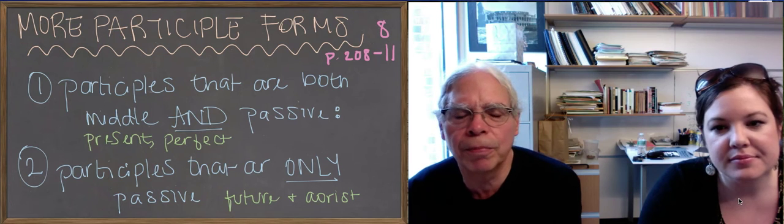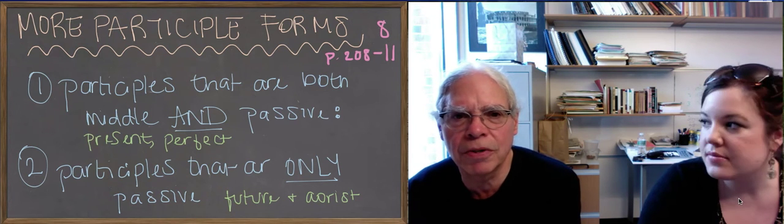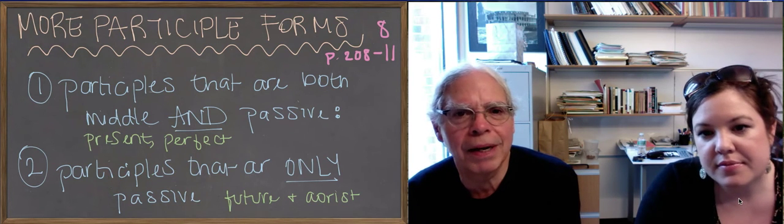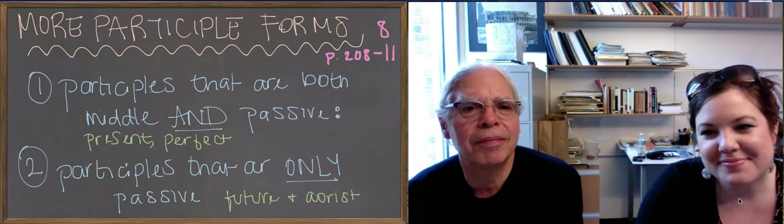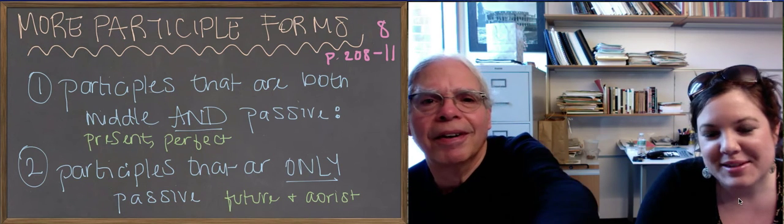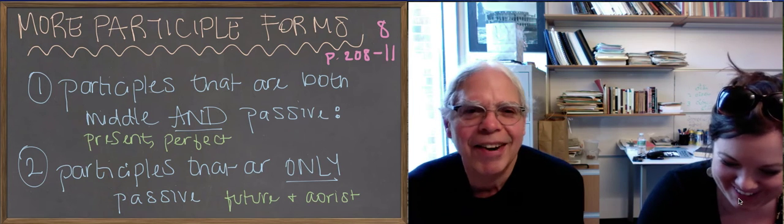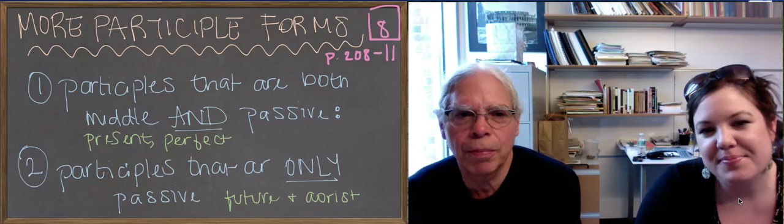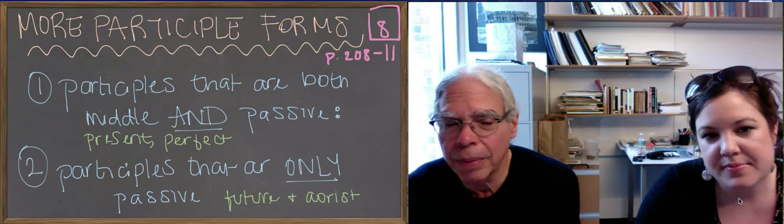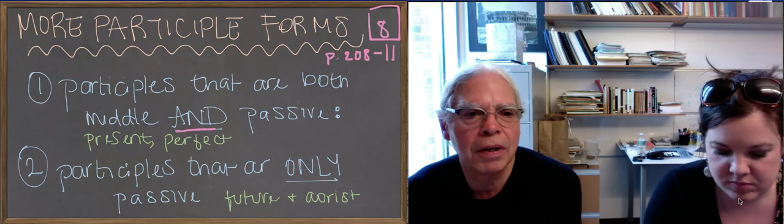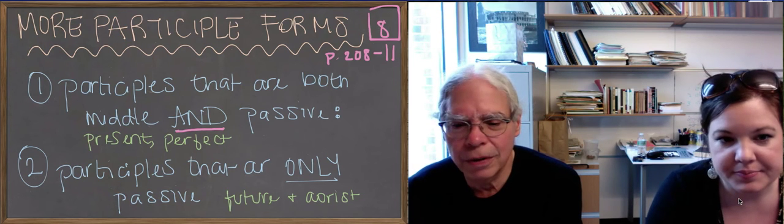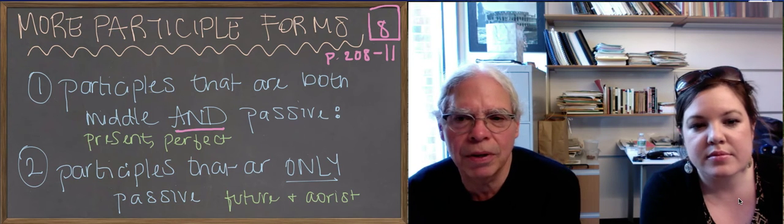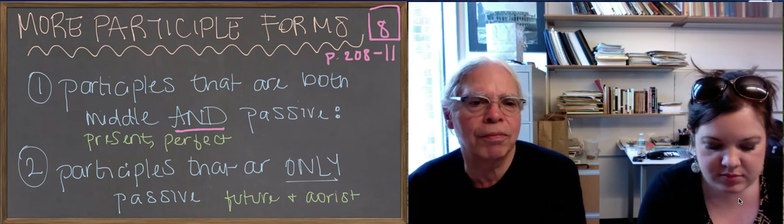The book's exhibit of these forms is on pages 208 through 211. Malise has written that up there in pink. And why is there an eight over it? Unit eight. All right, and so what we're going to do is first we're going to do participles that are both middle and passive, that is the present and the perfect participles. So the forms are the same whether they're one or the other, and you have to disambiguate them on the basis of various criteria that we've been learning.